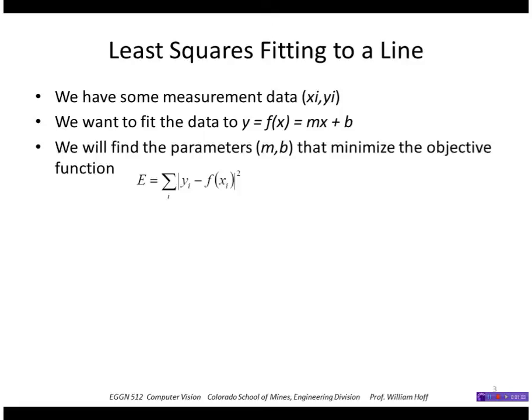So we want to find the parameters M and B that minimize the objective function or residual of the square errors. We take the measured Y values and the X values, we predict what Y value we'd get, we take the difference and we sum the squares. So an example might be these three points in an XY plane and we want to fit a straight line to them.